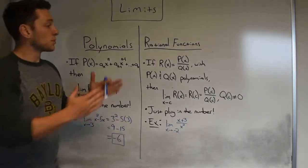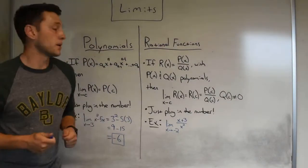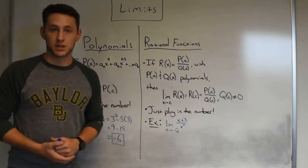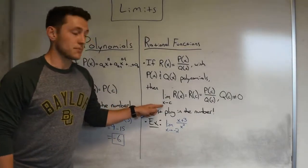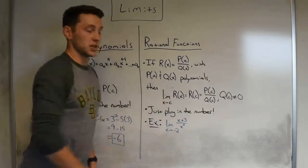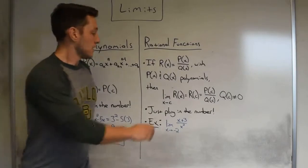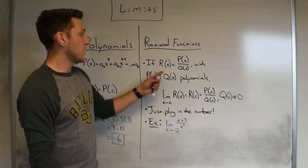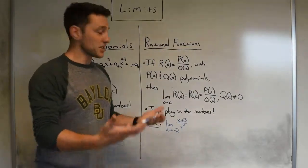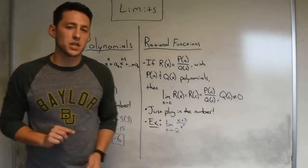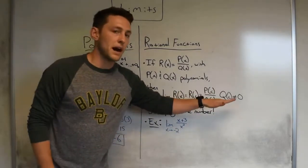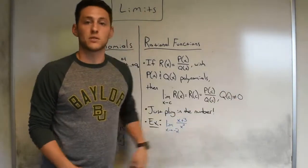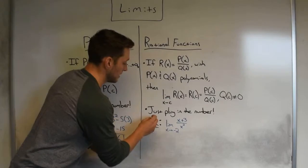With rational functions, we're going to follow the same thing. Recall that a rational function is just a polynomial divided by another polynomial, so it kind of makes sense that these guys would follow the same rules. If you are computing the limit as x approaches some number c of your rational function, all you do is just plug in the number. There's only one stipulation: we could have the bottom equal zero, in which case we'd be dividing by zero — so this is contingent on the bottom not equaling zero. But the rule is simple: just plug in the number.